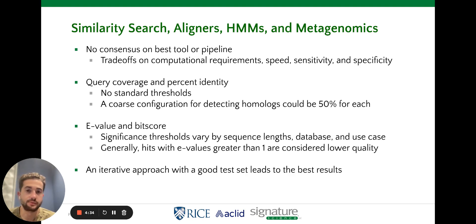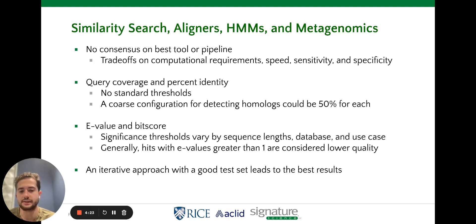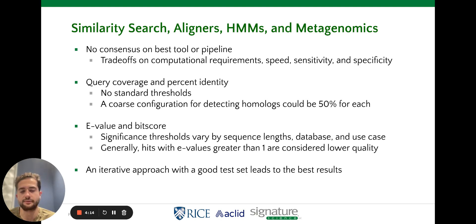Typically, there are trade-offs between power, speed, sensitivity, and specificity. And while tools don't share a common measurement scheme, there are some common identity metrics like query coverage and statistical measures like e-value. There aren't any standard thresholds for these, and so a lot of times you'll have to experiment to find which parameters work best or which thresholds will provide the best results for your use case.